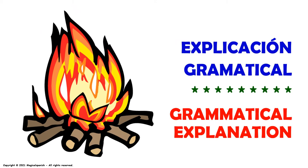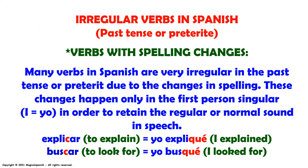Explicación gramatical. Irregular verbs in Spanish — past tense or preterite. Verbs with spelling changes. Many verbs in Spanish are very irregular in the past tense or preterite due to changes in spelling. These changes happen only in the first person singular — I, yo — in order to retain the regular or normal sound in speech. For example: explicar, to explain — yo expliqué, I explained. Buscar, to look for — yo busqué, I looked for.